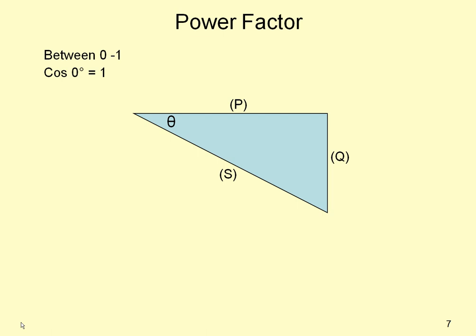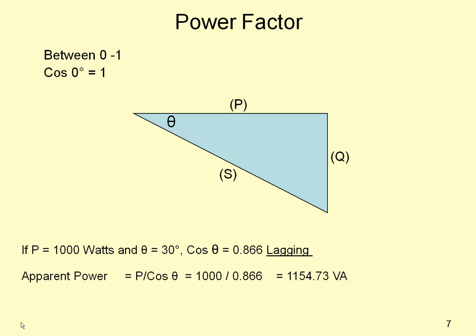The power factor is very important. It will always lie between 0 and 1, so the cosine of 0 degrees is 1. Taking an example, if the power is 1000 watts and theta is 30 degrees, the cosine of theta would be 0.886 lagging. The apparent power would be 1000 watts divided by 0.886, so we have 1154 VA.